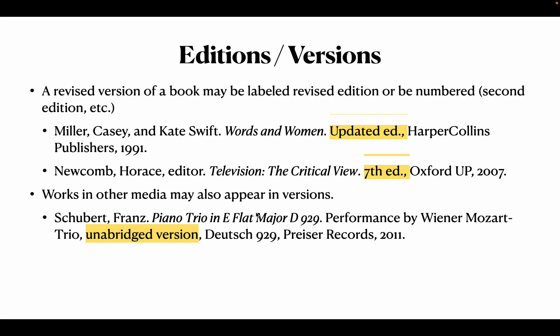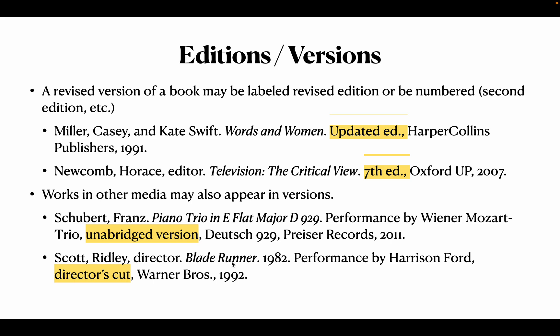Works in other media may also appear in versions. For example, a concert or musical performance can be labeled 'unabridged version.' For the movie Blade Runner, directed by Ridley Scott: Scott, Ridley, director. Blade Runner. 1982 is the first produced year. Performance by Harrison Ford. Director's cut is the version, which came in 1992. You are focusing on Harrison Ford's performance, which is why 'performance by Harrison Ford' is included.